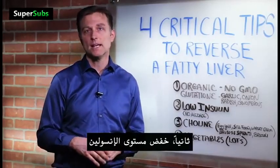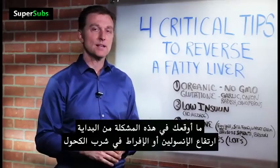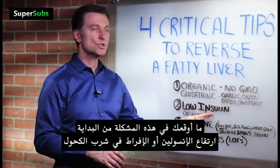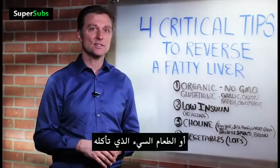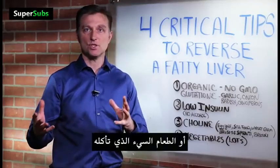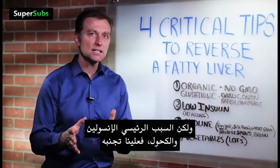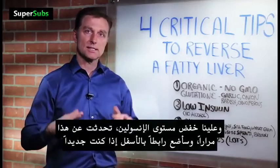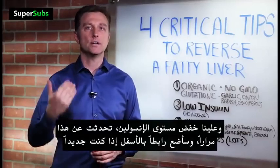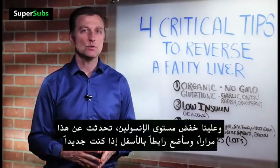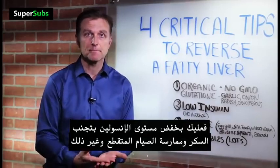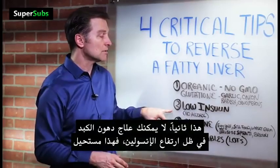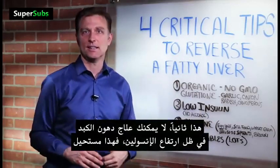Number two is to keep your insulin really, really low. The way you got into this mess in the first place is that your insulin was either too high, or the fatty liver came from too much alcohol or other things like junk foods you've eaten. Mainly it's the insulin and the alcohol. So yes, we need to cut the alcohol out of the diet, and we also need to bring insulin down. Insulin needs to come down — we have to cut out the sugar and do intermittent fasting. You can't fix this with high insulin. It's impossible.